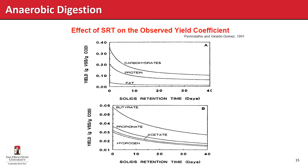A graph comparing carbohydrates, proteins, and fats shows yield in grams VSS per gram COD removed versus solids retention time (SRT) in days. Carbohydrates yield the highest, proteins lower, and fats the lowest. A longer SRT gives a lower yield, which is desirable because it means less sludge to manage. However, longer SRT in a CSTR-type system requires a larger reactor, so there is a trade-off.